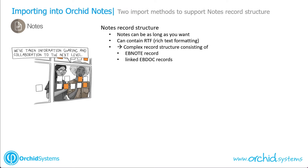Orchid Notes allows you to store notes as long as you want in the Sage 300 database. The notes can contain rich text formatting, and because they can be thousands of characters long with rich text formatting, we have a complex record structure consisting of a single EB Note header record and then linked EB Doc records, each with 10 fields of 250 characters each, which get joined together to show you the note. We have a similar record to store the rich text formatting.